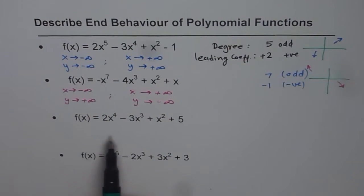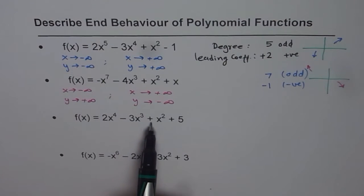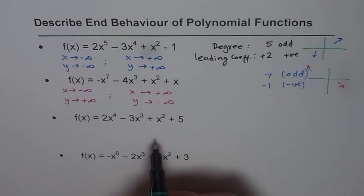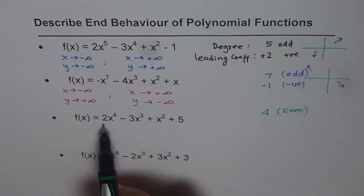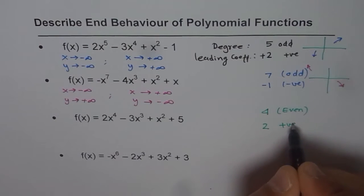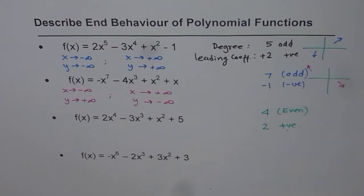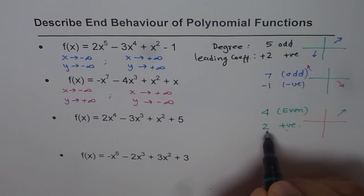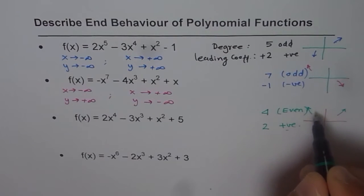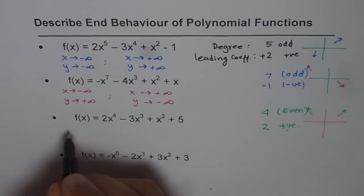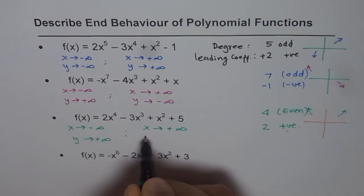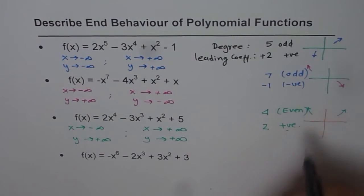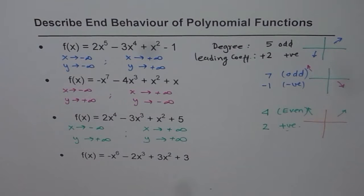Now let us look at the next function: 2x⁴ - 3x³ + x² + 5. In this case, the degree is 4, which is even. The leading coefficient is 2, which is positive. Positive means right side up. Even degree means both sides face in the same direction — so both are up. Therefore, as x approaches negative infinity, y approaches positive infinity, and as x approaches positive infinity, y also approaches positive infinity. That is the end behavior of this polynomial.